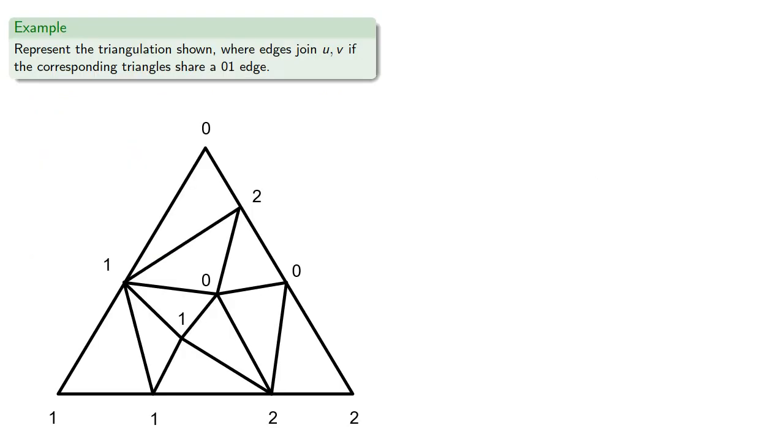So, here's how that might look. We'll have our V0, our exterior region. And then we'll have vertices corresponding to each of the triangles. And if there's a 01 edge between two regions, we'll put an edge between the corresponding vertices.